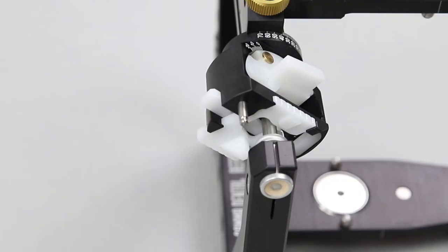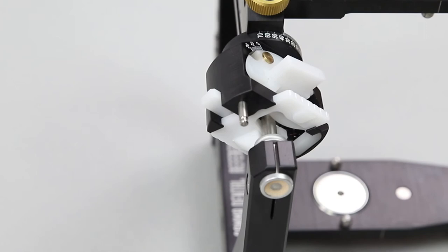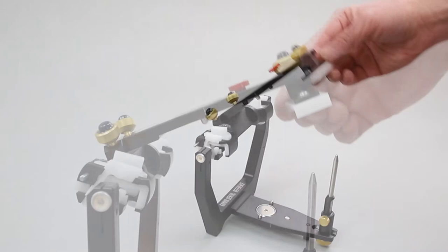The condylar housings are equipped with integrated centric locks. By moving the locks upwards, the lock mechanism is activated and the articulator members are fixed in a firm centric position. In this position, the movement capacity is limited to pure rotation.